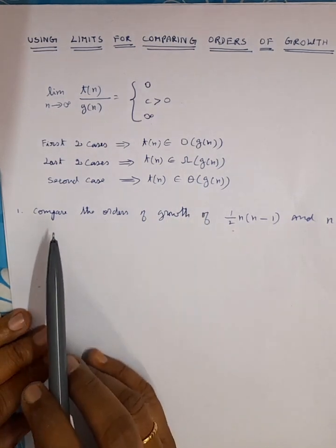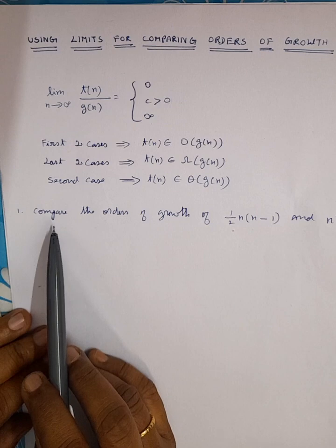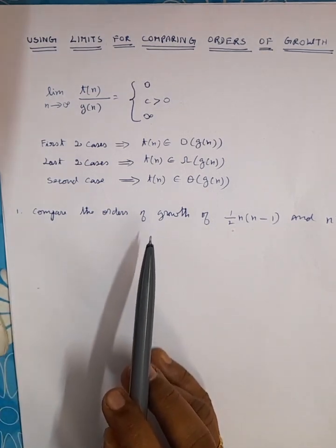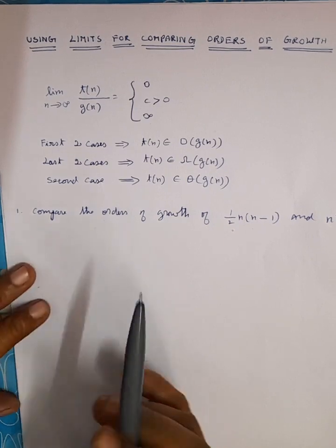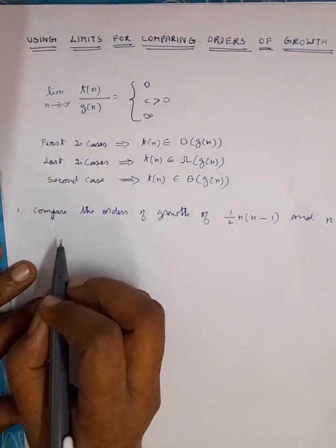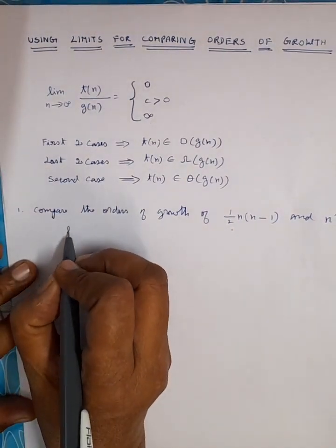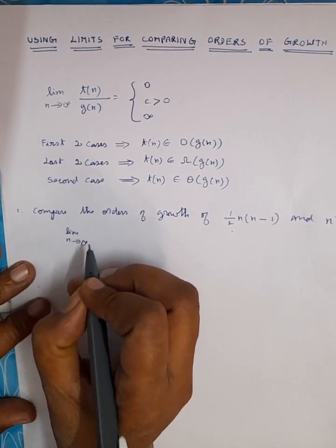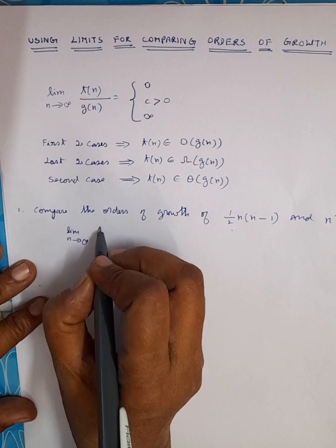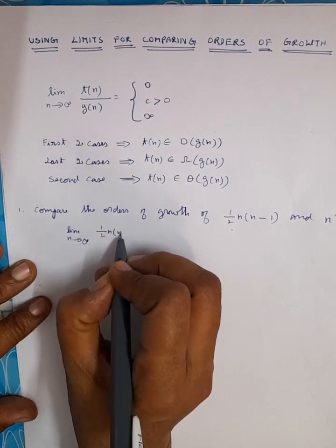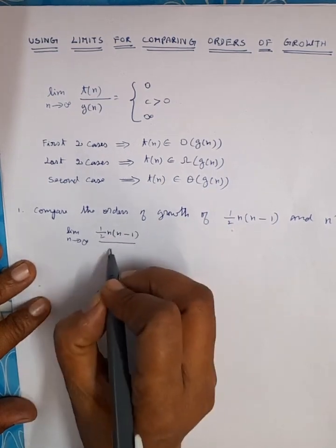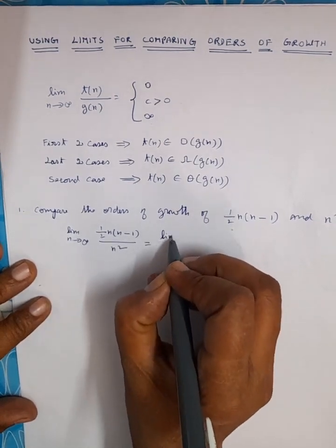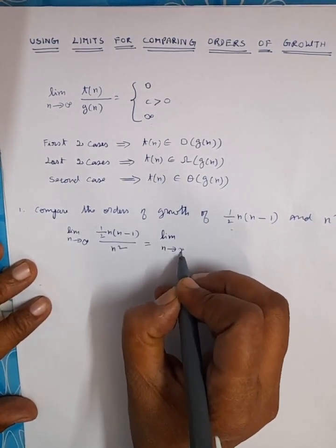Now let's see the problems. The first problem is to compare the orders of growth of ½n(n−1) and n². Let's use this limit property for solving this problem: limit as n tends to infinity of ½n(n−1) divided by n².